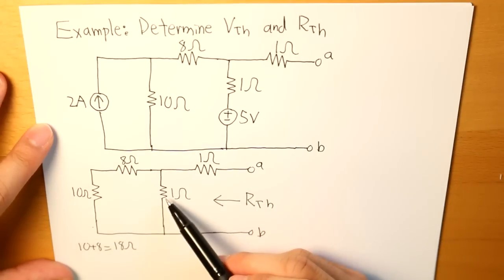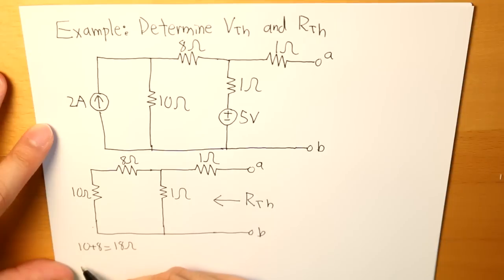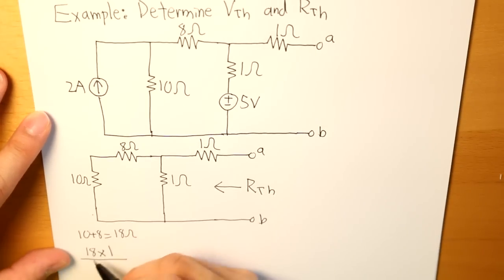And then this 18 ohm is going to be in parallel with 1, so what our equivalent resistance for that is going to be 18 times 1 divided by 18 plus 1, that would be 18 over 19 ohms.